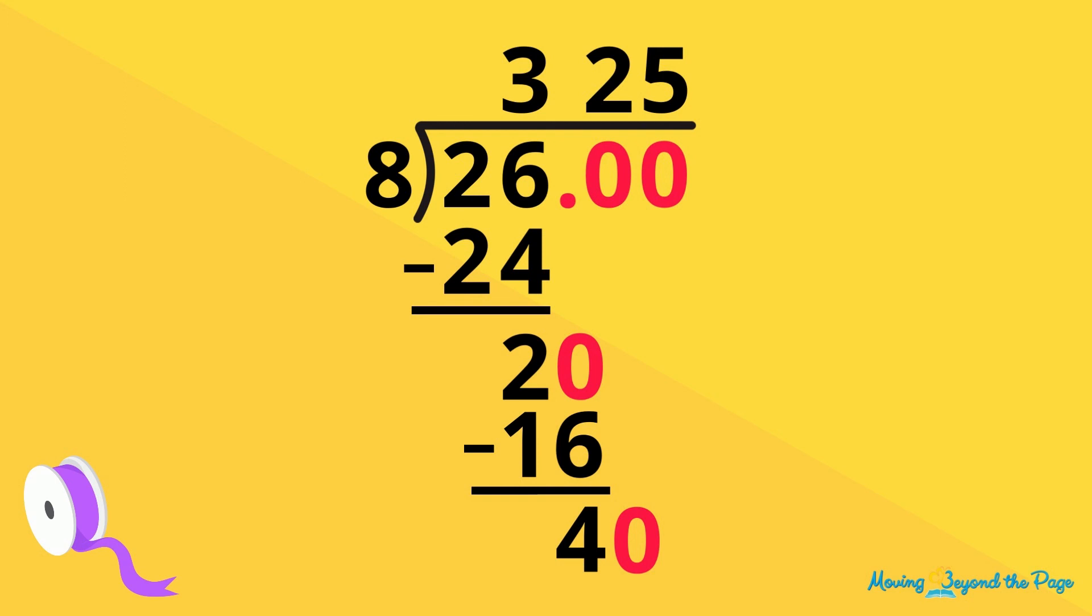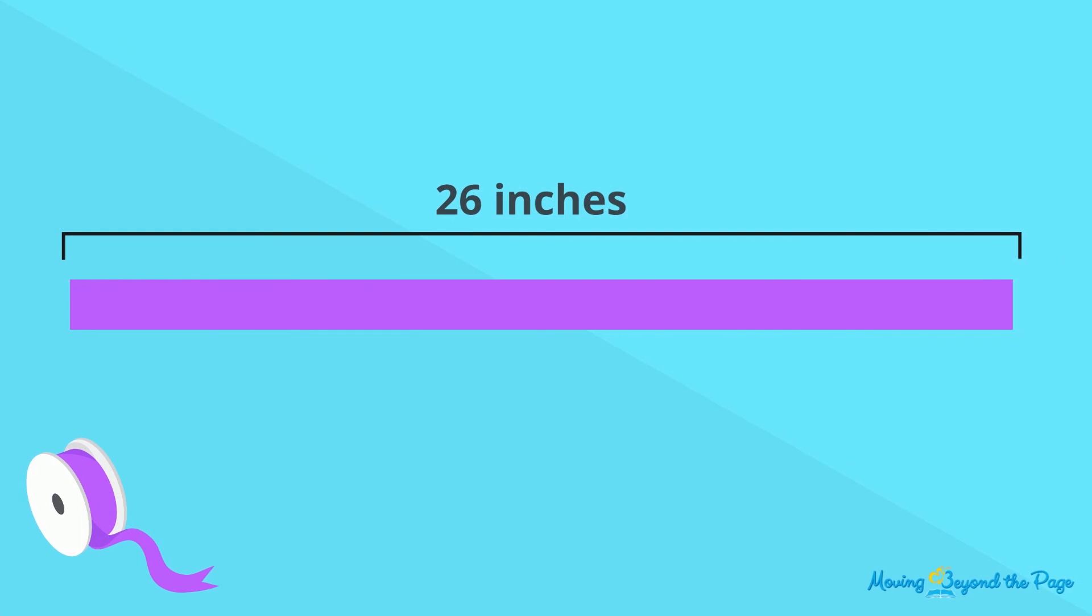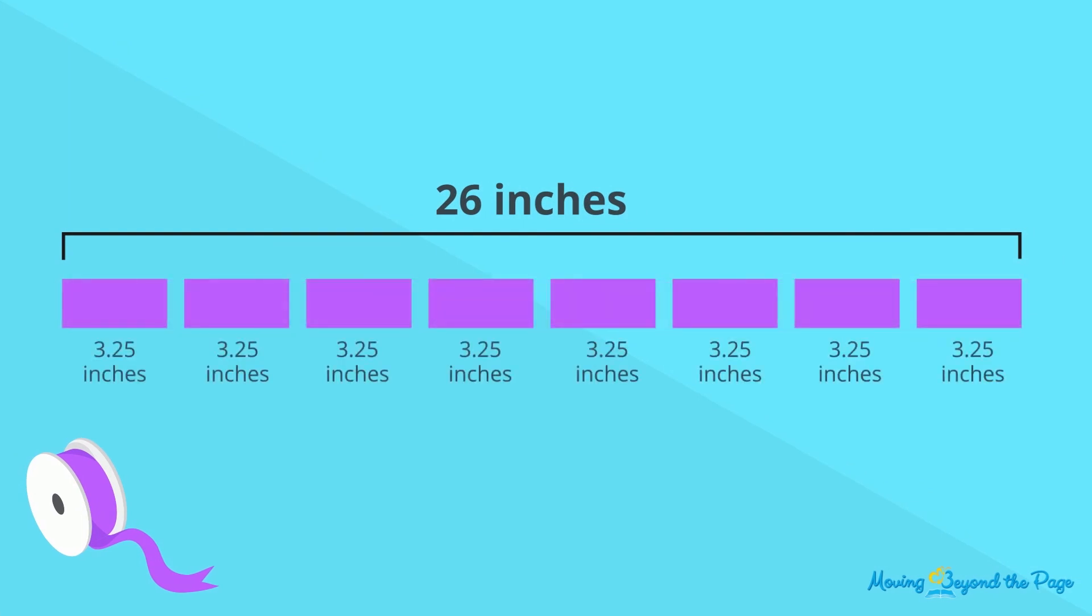So the only step left is to put the decimal point in the quotient directly above where it is in the dividend. 26 inches of ribbon divided into 8 equal pieces equals 3 and 25 one-hundredths inches for each piece.